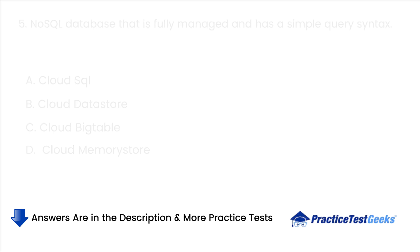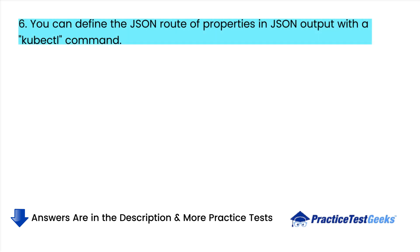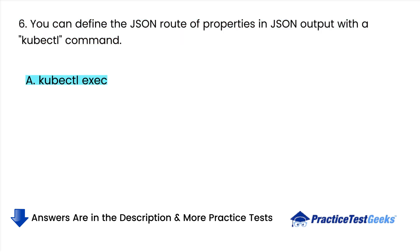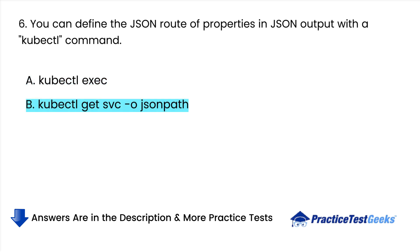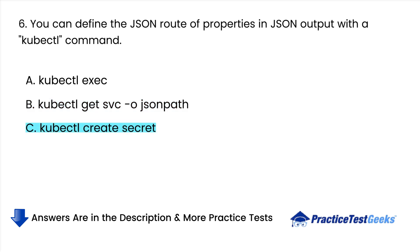You can define the JSON root of properties in JSON output with a kubectl command. A. kubectl exec. B. kubectl get svc -o json path. C. kubectl create secret.